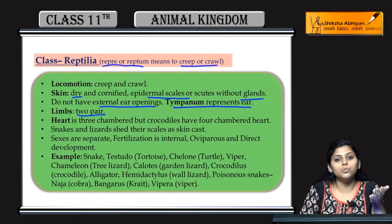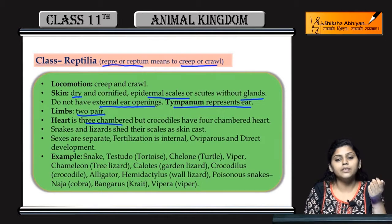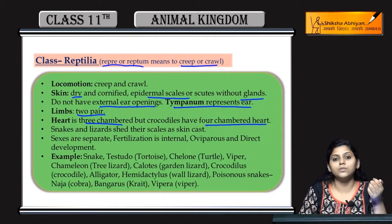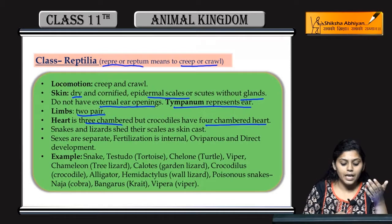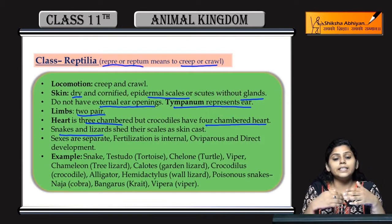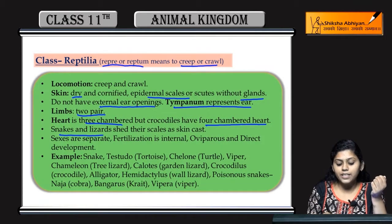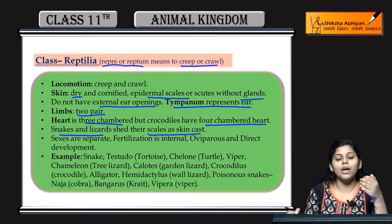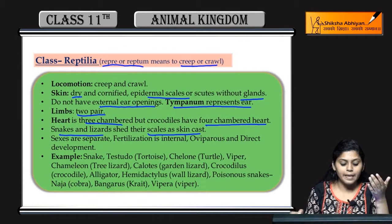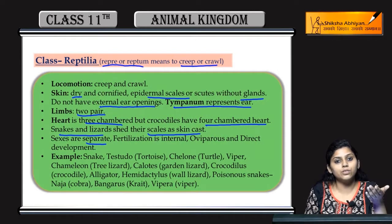Limbs two pairs hote hain. Heart is three-chambered, but crocodile ke case mein four-chambered heart hota hai. Snakes or lizard ki ek alag property hoti hai — jab inki nayi skin aati hai toh ye apni purani skin ko shed kar dete hain. They shed their scales as a skin cast.